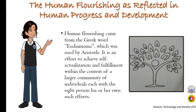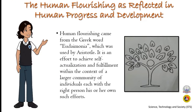Chapter 5 addresses human flourishing as reflected in human progress and development. Human flourishing comes from the Greek word eudaimonia, used by Aristotle, and is an effort to achieve self-actualization and fulfillment within the context of a larger community of individuals, each with the right to pursue their own efforts. Human flourishing, as reflected in human progress and development, is mainly an act or exertion a person does to reach his or her desired way of living.